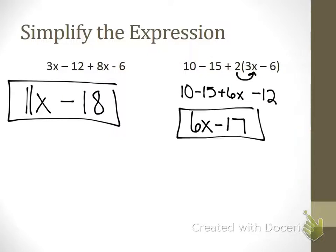So six x minus seventeen. There's nothing I can combine with six x. All right, so simplifying expressions is combining like terms. We combine our x's together, we combine our numbers together, and that's all we can do. All right, because we don't know what x equals.